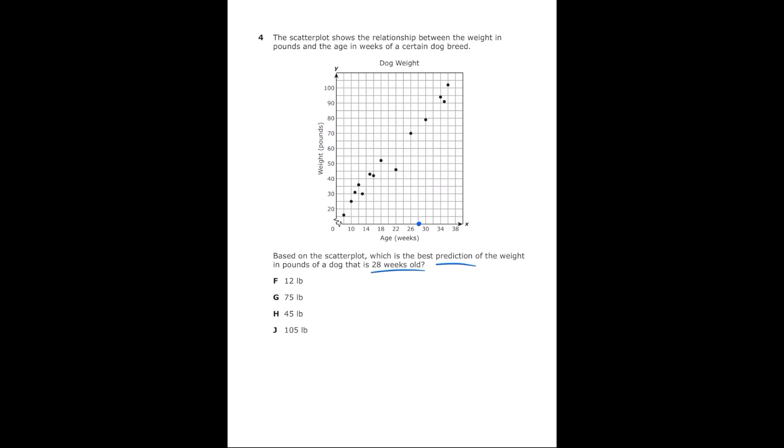We know that the dog is 28 weeks old so I'm going to go to the x-axis where 28 should be and I'm going to draw a line straight up until I get to about where those dots are kind of forming a line. And once I do that I can go ahead and draw my line to the left.